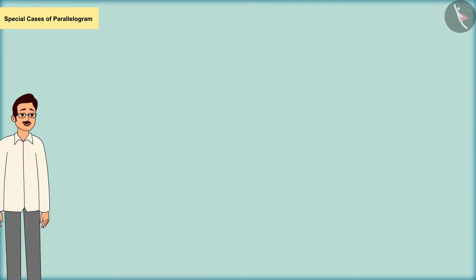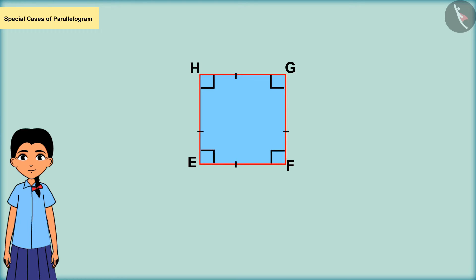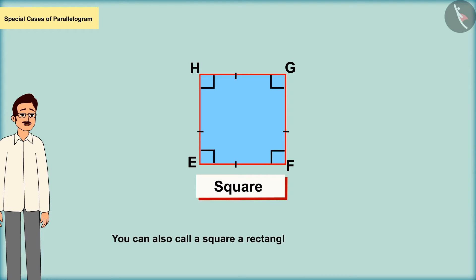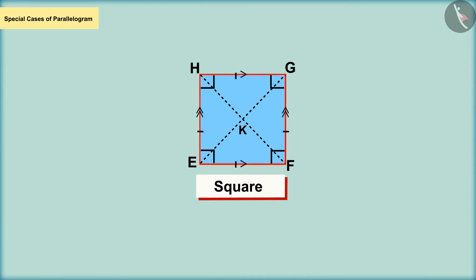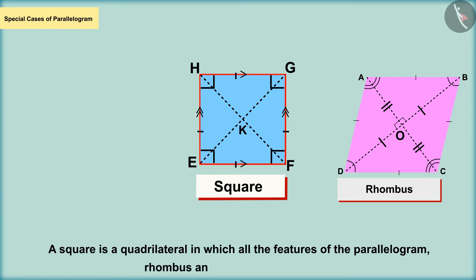Meena made a parallelogram with four equal sides and all right angles — this is called a square. A square can also be called a rectangle with all sides equal. Since the square has equal sides and equal opposite angles, it shares characteristics with the rhombus. A square is a quadrilateral in which all features of the parallelogram, rhombus and rectangle are present.